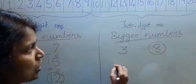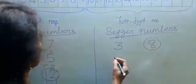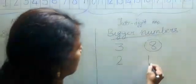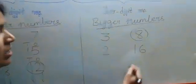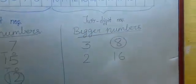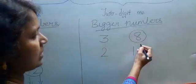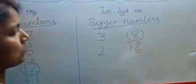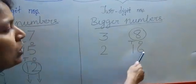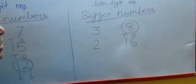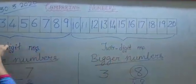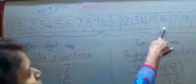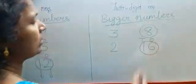Now we will compare one one-digit number and one two-digit number: 2 and 16. Which is the bigger number? 2 is a one-digit number. 16 is a two-digit number — it has two places: 6 is in the one's place and 1 is in the ten's place. So the two-digit number is bigger than the one-digit number, and 16 is the bigger number. See 16 on the number line — here is 16, here is 2. 16 is further away from 0, so 16 is the bigger number.